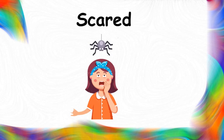Look at this girl. Look at her eyes and her face. What do you feel? How is she feeling? She is scared. You can see the word scared here. Can you tell me why she is scared? Because she has seen a spider above her head — that's why she is scared. So which feeling are we talking about in this slide? Scared. Repeat after me — scared.